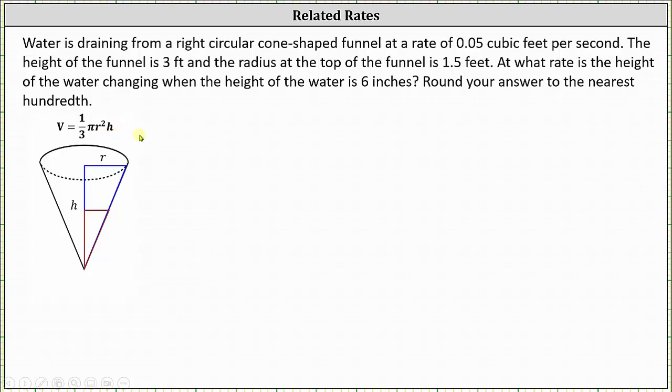Let's begin by listing all the given information. Because the water is draining at a rate of 0.05 cubic feet per second, we know dV/dt, or the change in volume with respect to time, is equal to negative 0.05 cubic feet per second, or negative 1/20th cubic feet per second. Notice how it's negative here because the water is draining.